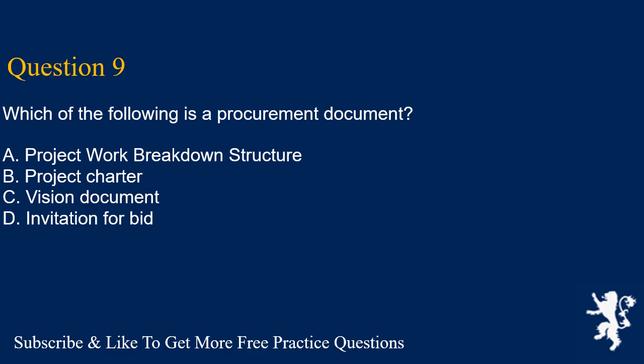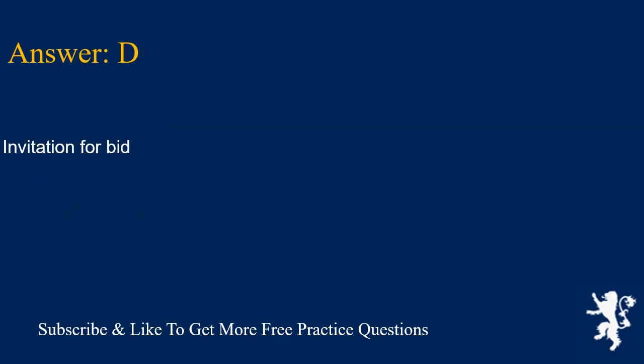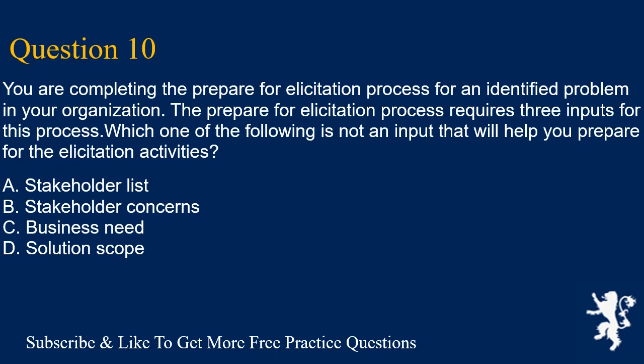Question 9: Which of the following is a procurement document? A. Project work breakdown structure. B. Project charter. C. Vision document. D. Invitation for bid. Answer is D. Invitation for bid.